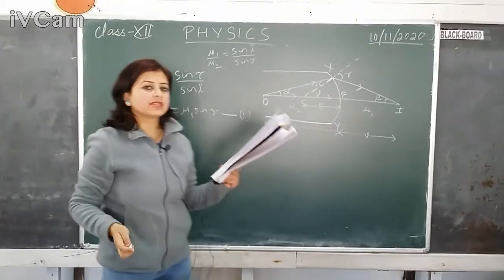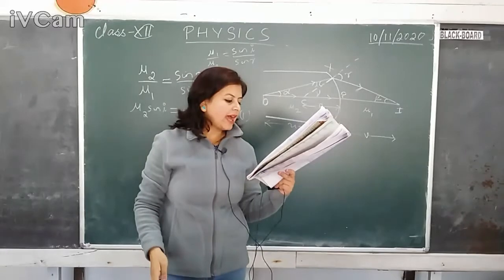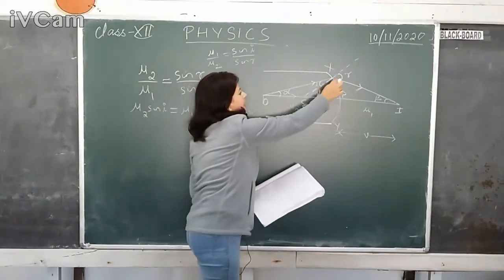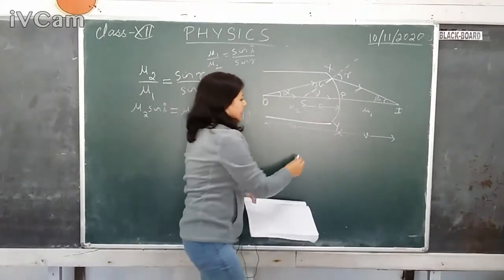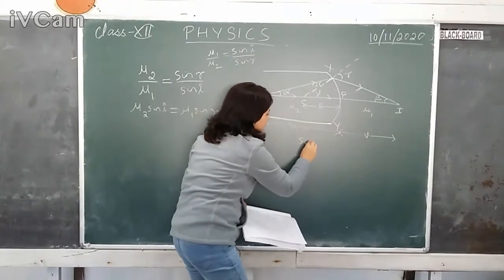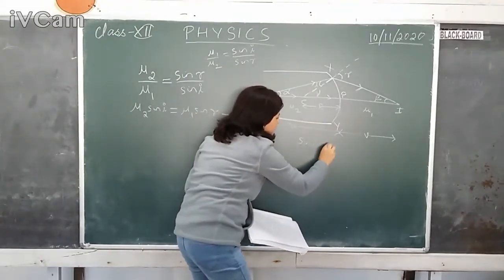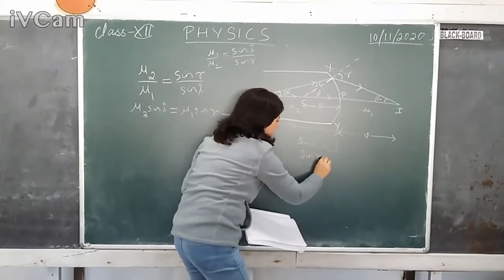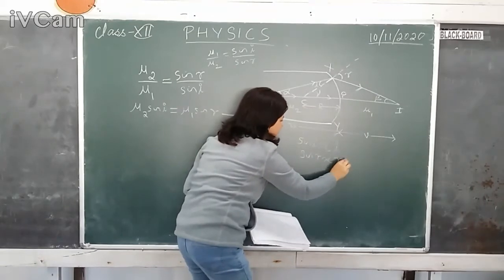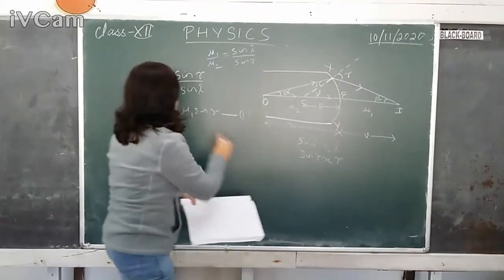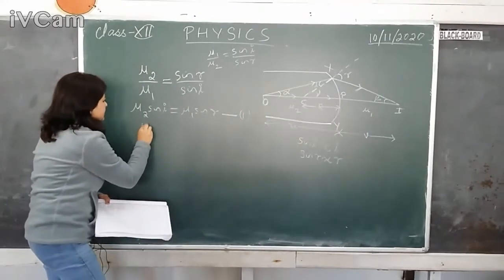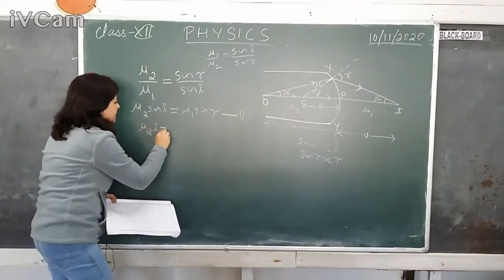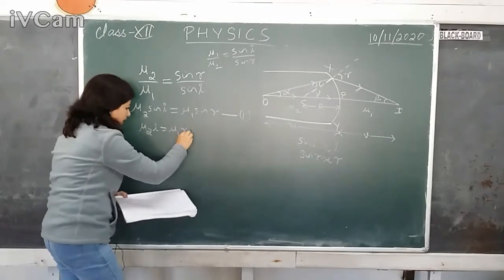One important thing: if the angles I and R are small, then in radians the value of sinI is almost equal to the angle itself, and sinR is almost equal to R. So this expression can be written as mu2 into I equals mu1 into R.